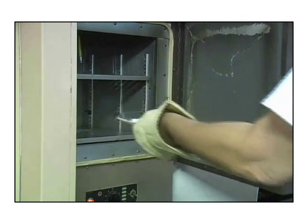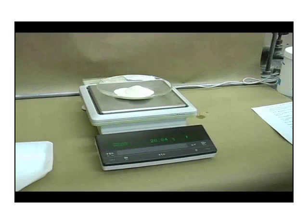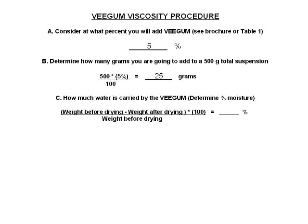This allows for the calculation of percent moisture. The next slide provides an equation for calculating percent moisture by this method. The sample used for this demonstration had a moisture content of 6.6%. Because water does not provide viscosity, we have to correct the amount of material that will serve as our test sample, subtracting out the water. The next slide provides the math for this correction.